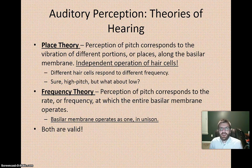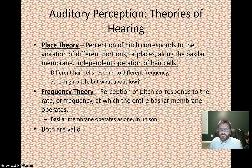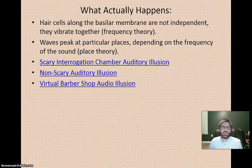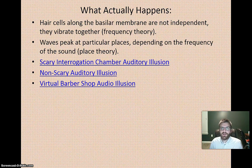There are two theories about how we perceive auditory sound: place theory and frequency theory. Place theory argues that hair cells in the basilar membrane operate independently, with different cells responding to different frequencies — which is valid for high-pitch sounds but doesn't explain low-pitch detection. Frequency theory says the basilar membrane vibrates as a whole unit. Both theories have validity: hair cells do vibrate together as frequency theory suggests, and waves do peak at particular places depending on frequency as place theory suggests. Combined, they explain our ability to hear.